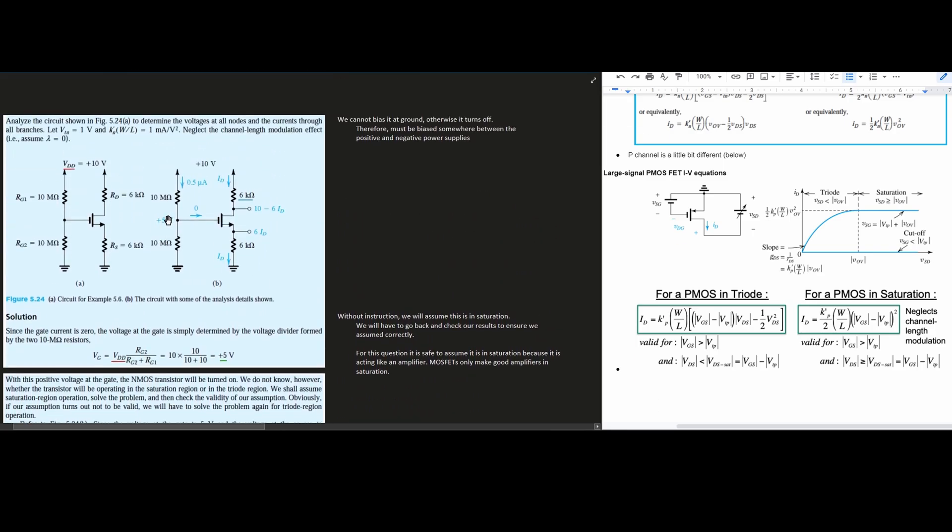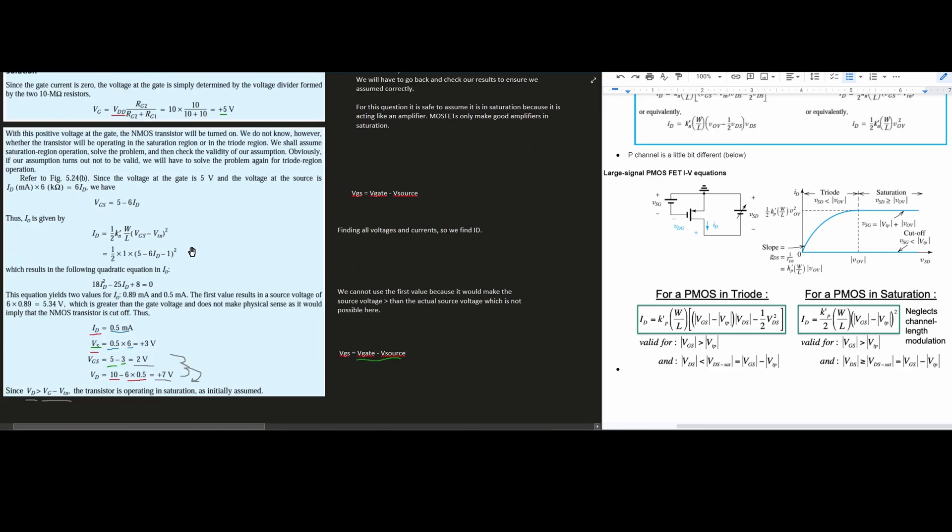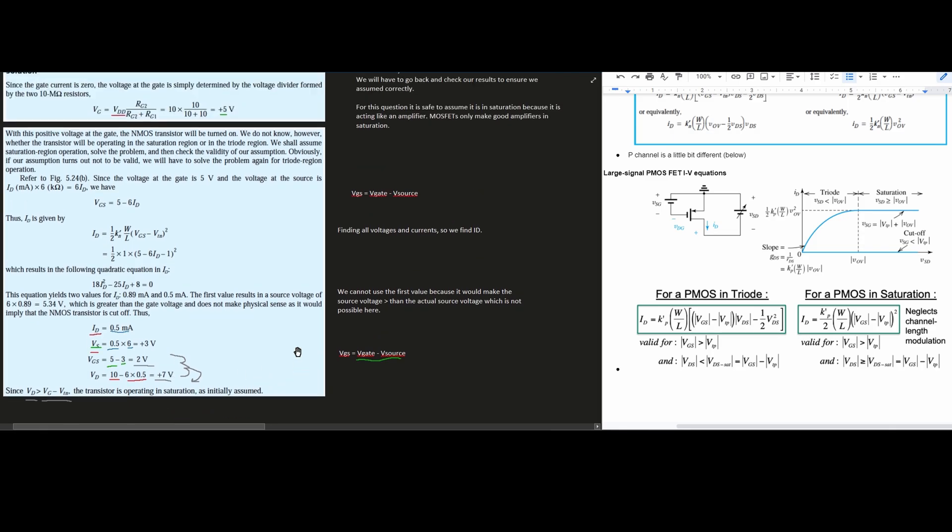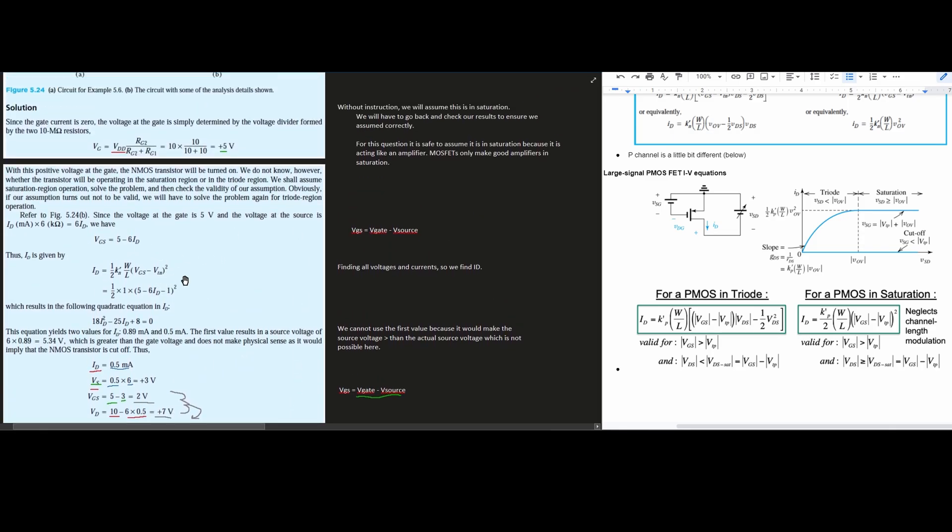It's asking us to analyze the circuit and determine the voltages at all the nodes and the currents flowing through the branches. So we found the ID here, ID here, and we found the voltage across this node right here. And so that's going to be it for this problem. If we get to here and our assumption is wrong, we would just have to redo it, except use, instead of this equation, the one for a triode.